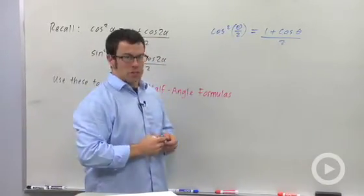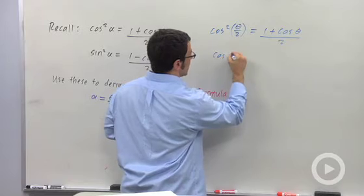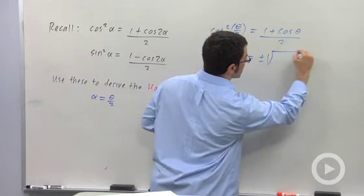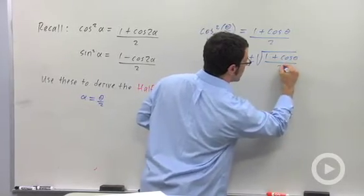All I have to do is extract square roots, and I get cosine of theta over 2 is plus or minus the square root of 1 plus cosine theta over 2.